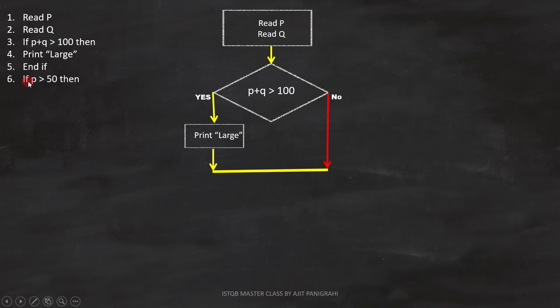Line 6 is if P is greater than 50. This is a condition, so it will be represented like this. Line 7 is print P large, and we have to put it here in the flowchart.